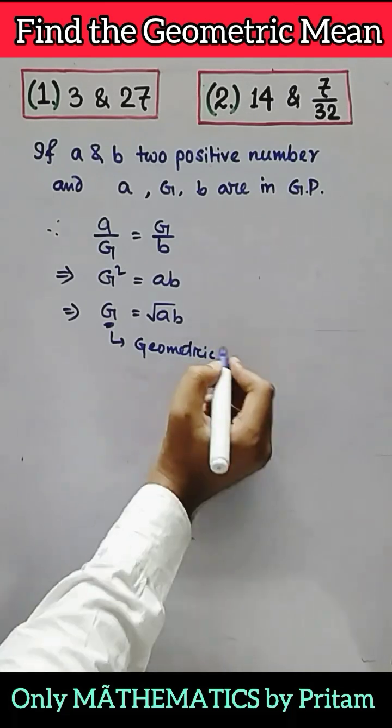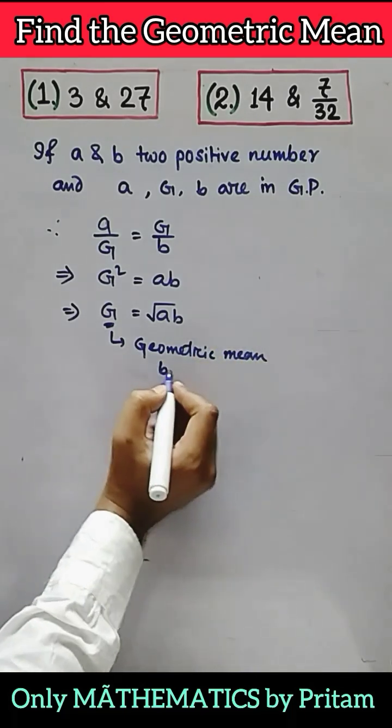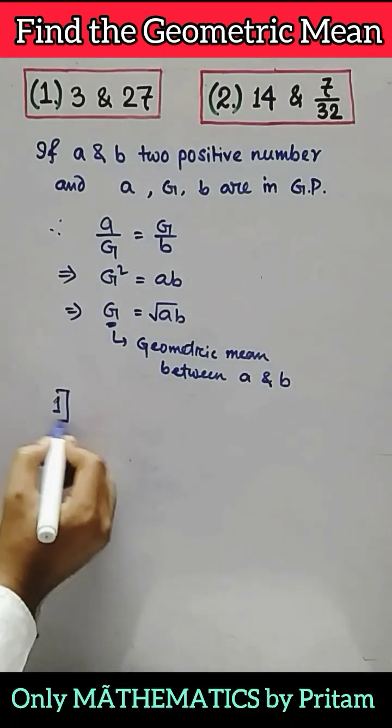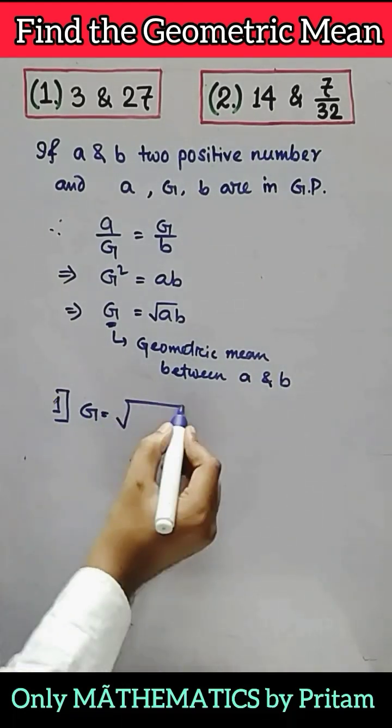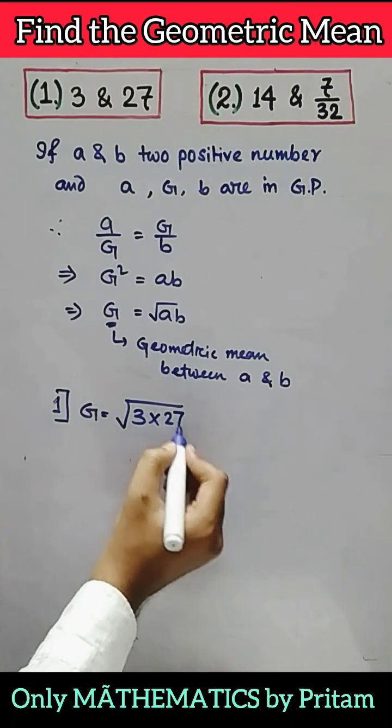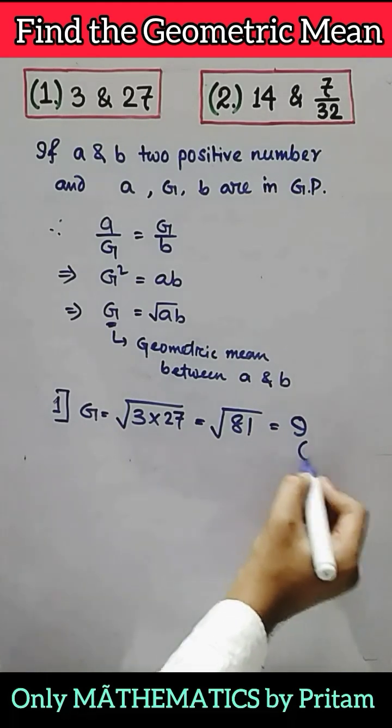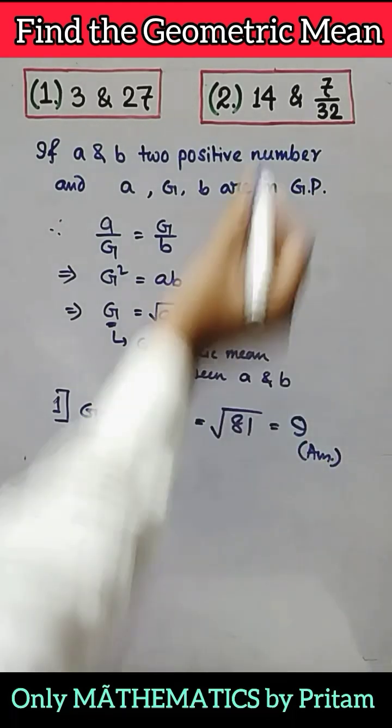In the first question, the geometric mean will be √(3 × 27). Now 3 × 27 equals 81, and √81 = 9, so 9 is the geometric mean.